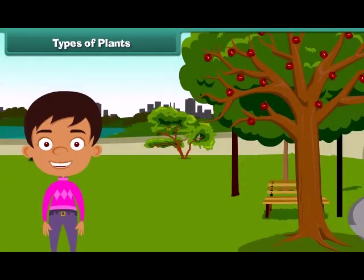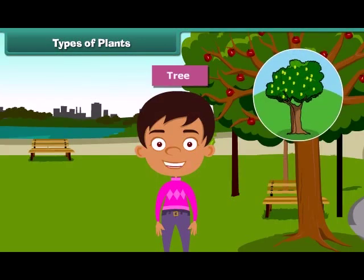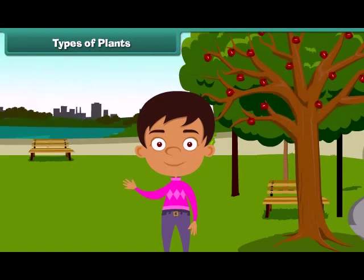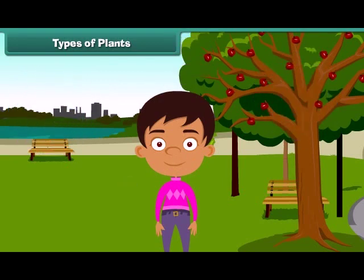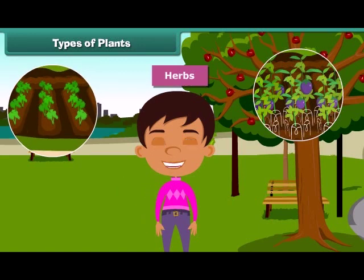Children, we often see different types of plants around us. We find that some plants are tall while some are small. Plants which are very tall and strong are called trees — for example, mango tree, coconut tree, and neem. Plants which are smaller than trees are called shrubs, such as rose and sunflower. Besides, some plants are very small and are called herbs. Brinjal and spinach are examples of herbs.